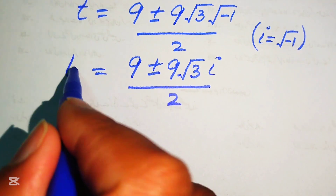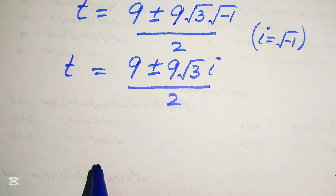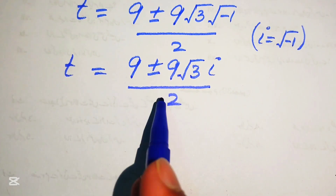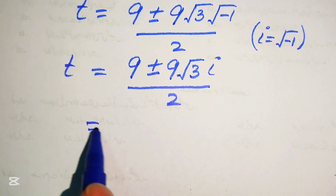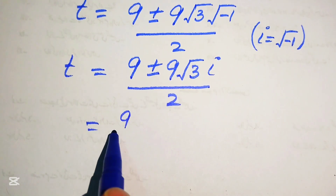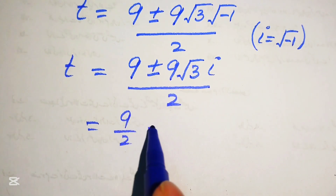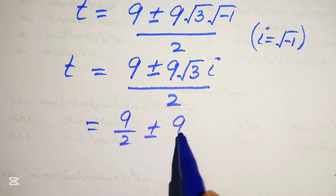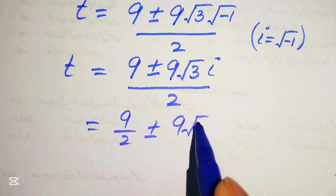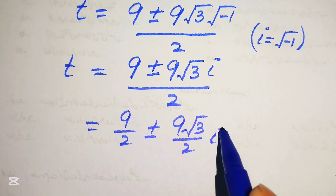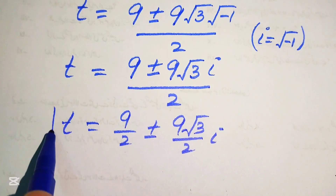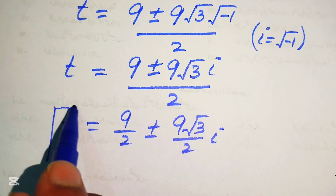Breaking this value, it is written as 9/2 ± 9√3/2 · i. These are the two complex values of the given equation.